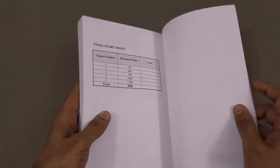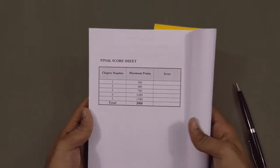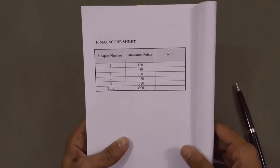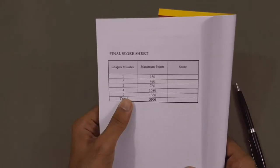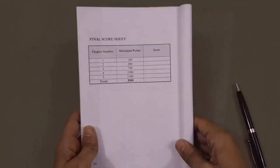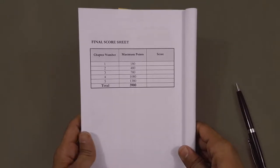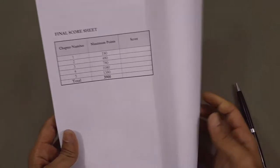When you finish the book, you get to the final score sheet where you can collect the scores from all of the chapters into a total score. This concept of a score system will hopefully keep you motivated and challenged to complete all of the exercises.